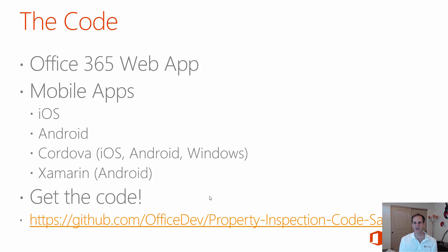The mobile apps were written in several different languages for you to use as examples. We have the iOS version targeted for the iPad Air device, written in Objective-C. We have the Android version which targets the Nexus 9 tablet, written in Java. We have the Cordova version written in HTML, JavaScript and CSS, built using the Cordova template for Visual Studio, targeting iOS, Android and Windows devices. You can see how you can write one Cordova application and use it for all those types of devices.